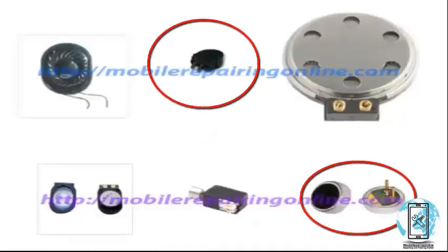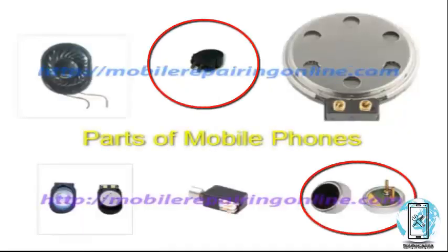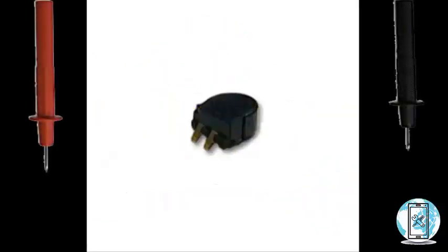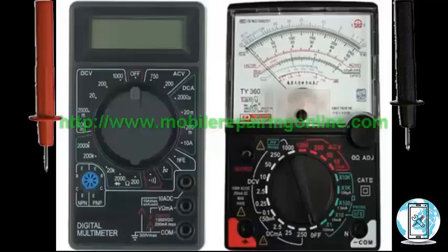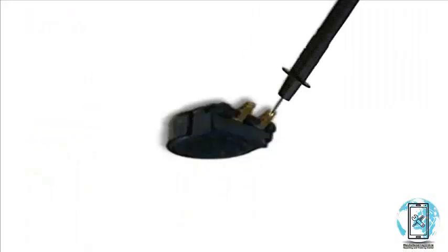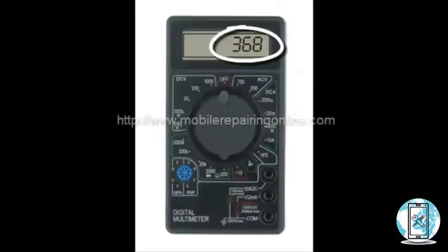Now let's talk about the mic. The mic also has a positive and negative terminal. It is checked by a digital meter on continuity mode. You put the negative lead on the positive side and the red lead on the minus — then you will get a reading.